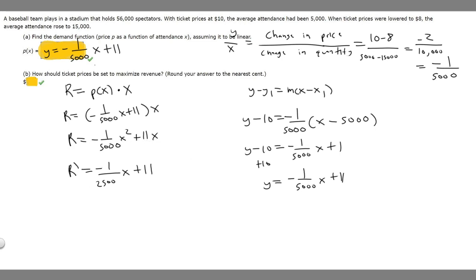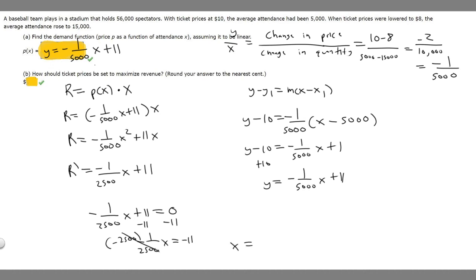Now let's set the derivative equal to zero: negative 1 over 2,500 x plus 11 equals 0. Moving 11 to the other side: negative 1 over 2,500 x equals negative 11. Multiplying both sides by negative 2,500, we get x equals negative 2,500 times negative 11, which equals 27,500. So the optimal attendance is 27,500.